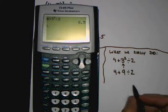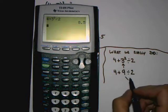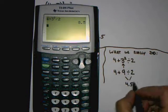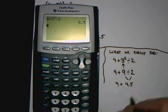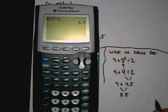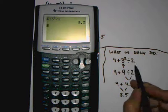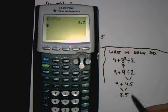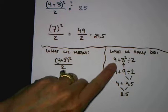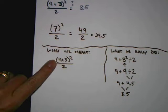Next in PEMDAS is the M and D, the multiplication and division. We have a division problem here. 9 divided by 2 is 4 and a half. So now we have 4 plus 4 and a half. 4 plus 4 and a half is 8.5. So here's what happened. The calculator did exactly what we told it to using order of operations. But what we told it to do was different than what we really meant.